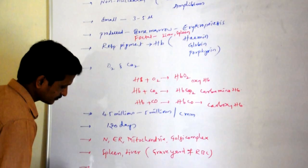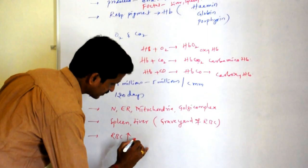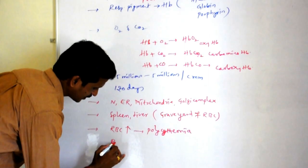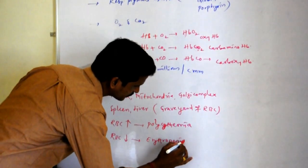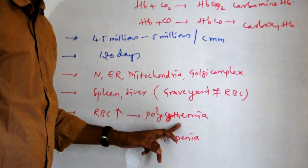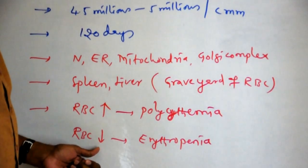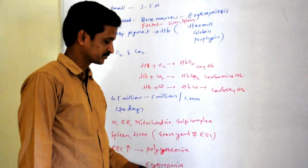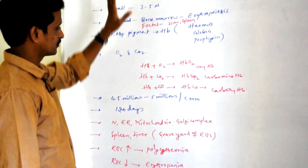If RBC number increases beyond normal, it leads to a condition called polycythemia, with symptoms like weakness, fatigue, and itching. If RBC number decreases, it leads to erythropenia — the person becomes weaker with blurred vision and shortness of breathing. These are the general characters of RBC.